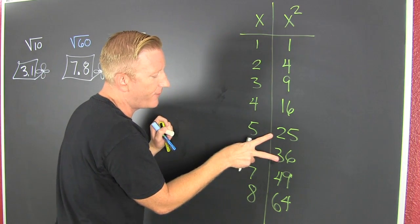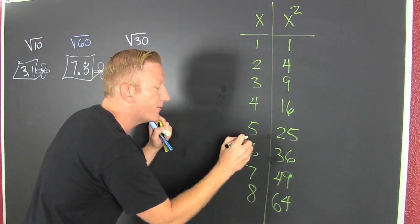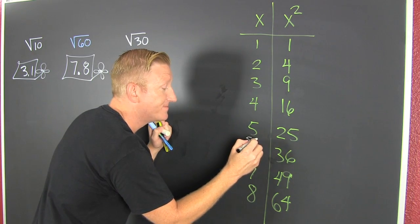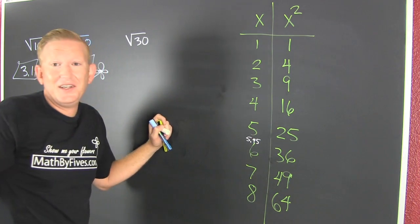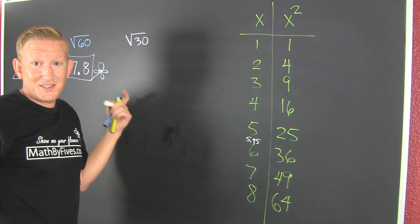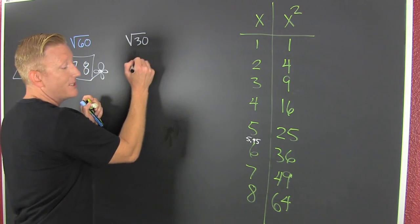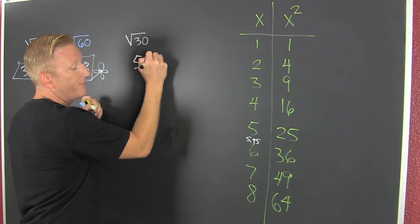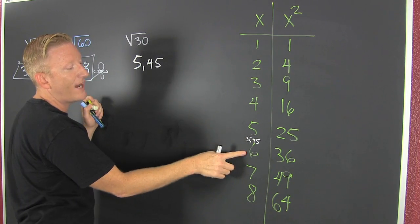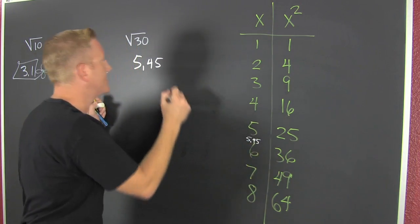It's 6 from here. So it's like 5.45-ish. Just a guess. An approximation. This is 5.45 because it's in between 5 and 6, because 30 is in between 25 and 36.